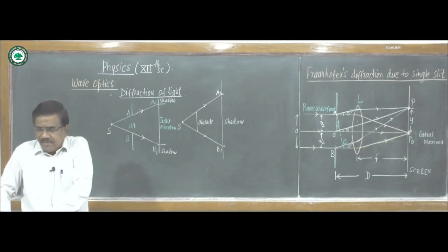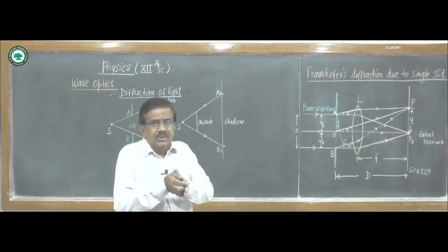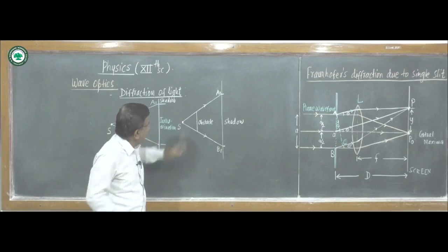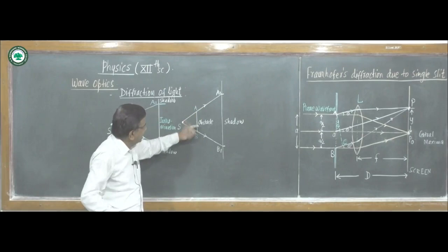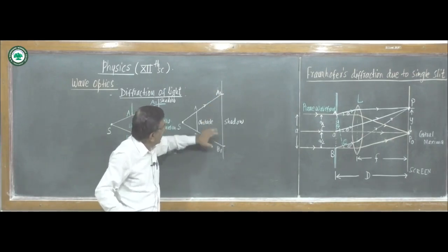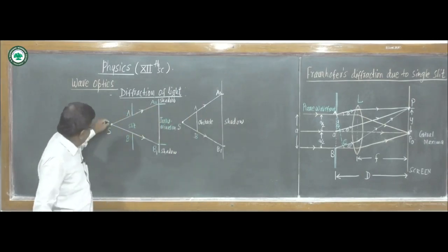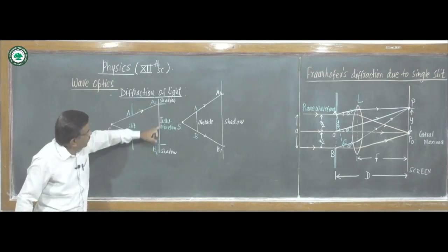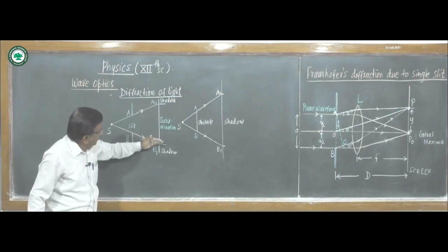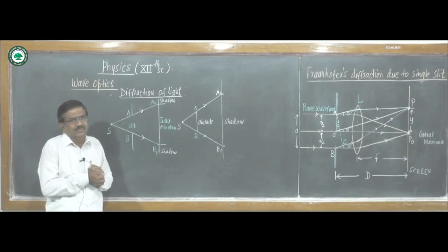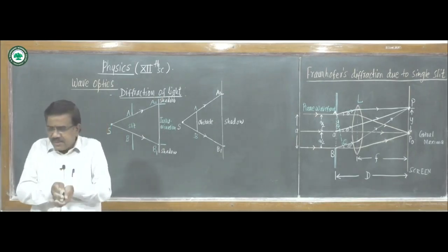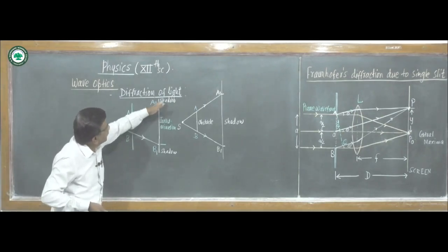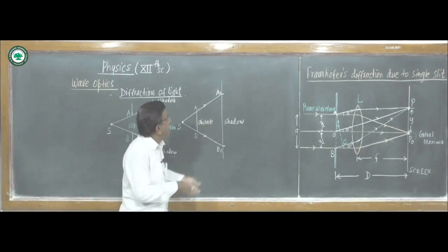We know that light travels in a straight line and produces a shadow when an obstacle is placed in its path. If light from a source is passed through a slit, the region A1B1 is illuminated, but above A1 and below B1 there is a geometrical shadow. Light does not enter the shadow region.